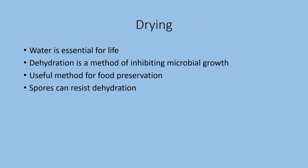Drying, desiccation, or dehydration is removing water from substances. Water is essential for all forms of life, so if you remove water, that's going to inhibit the growth of microorganisms. Dehydration — that removing of water — can be very effective, and is used a lot in food preservation. You dry out the food, desiccate it, dehydrate it. One thing you have to keep in mind are those spores — they can resist dehydration. In food microbiology, dehydration is used a lot, but there are certain mechanisms you have to keep in mind for the spores.